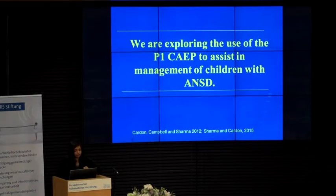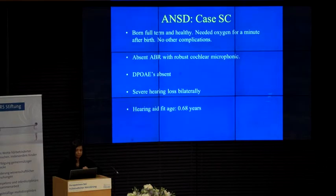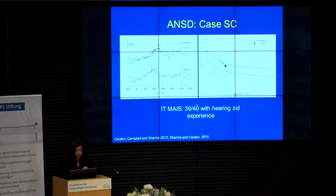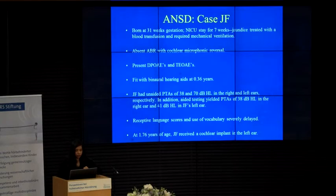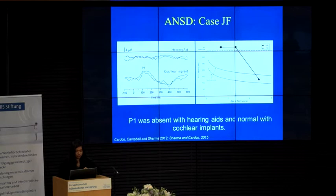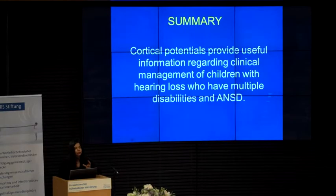Not just in children with multiple disabilities, but we've found it very useful in children with ANSD. Here's a child fitted with hearing aids at six months of age — you can see very clearly the unaided response and the aided response goes from outside of normal limits to within normal limits, and the child is doing quite well behaviorally, scoring about 39 out of 40 on the IT-MAIS. Contrast that with a child fitted with hearing aids at three months of age who had absolutely no response with hearing aids. They gave the child a cochlear implant, and the response comes out very nicely, moving from no response to within normal limits — this child is doing quite well. So cortical potentials and neuroplasticity can guide decisions in individual children, especially in cases of multiple disabilities and ANSD.